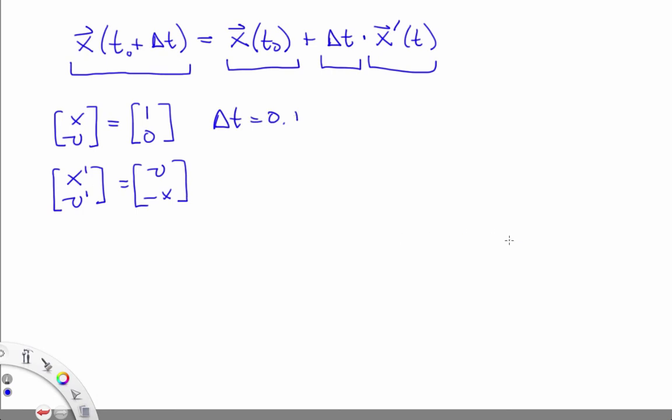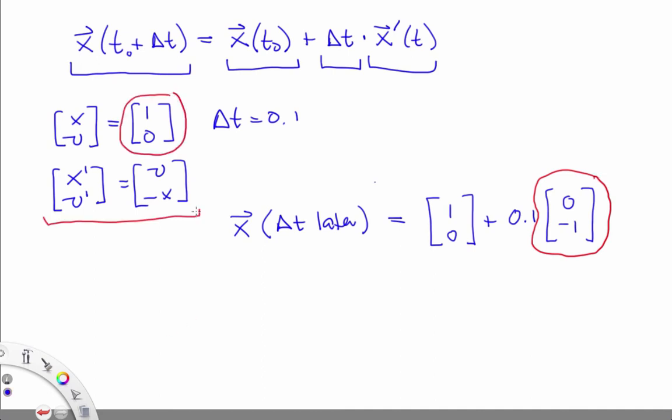And we're going to use a time step of 0.1. And then we're going to plug in to figure out what x and v will be 0.1 seconds later. And we get this using the equation above. This vector right here, I got by plugging this vector into this equation. So the final result here is exactly what we would expect for the simple harmonic oscillator. Remember the tangent vector here points straight down, and forward Euler walks a little bit out along that vector.